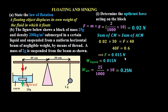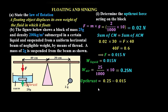With the weight in air and the weight in liquid, we can determine the upthrust. Upthrust equals weight in air minus weight in liquid: 0.25 minus 0.015, which gives us 0.235 newtons.